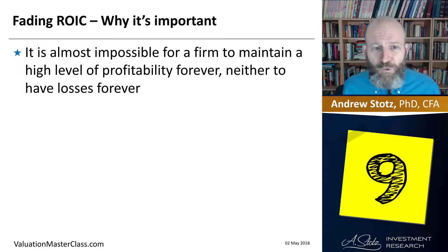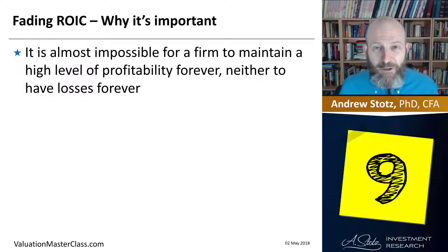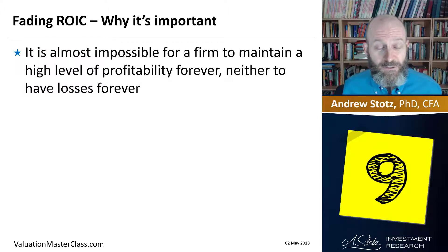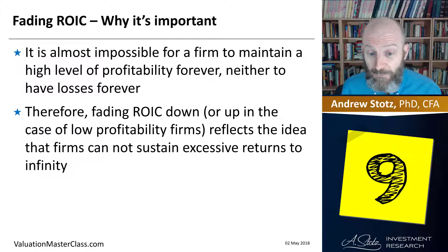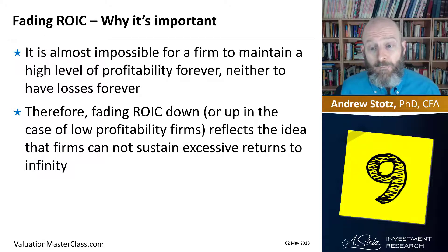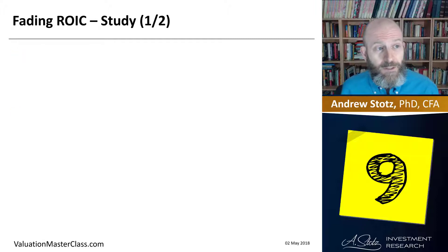It's almost impossible for a firm to maintain a high level of profitability forever or to have losses forever. Management is going to change, the shareholding structure is going to change — something is going to change. Therefore, fading the ROIC down, or up in the case of a low profitability firm, reflects the idea that firms cannot sustain excess returns to infinity.